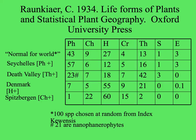He used these classifications to compare different parts of the world, generating what he called the 'normal for the world' by taking 100 species at random from Index Kewensis, a list of all plant species known at that time. Less than half of the plants are phanerophytes in the normal for the world, and hemicryptophytes are the other big category.